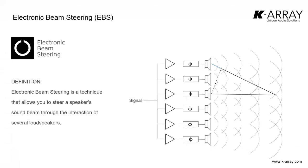So what is the idea behind electronic beam steering technology? If the user can change, modify, and affect the amplitude and the phase of each signal sent to each section of the array, they can decide at which point in space they want perfect summation between the sound waves, and at which point they prefer cancellation. In other words, you can change how the energy from the cluster is distributed in space by playing with amplitude and phase of the signal sent to each section of the array.